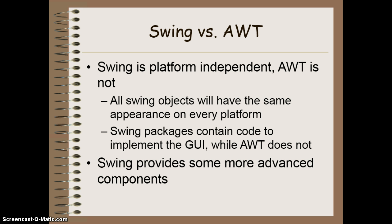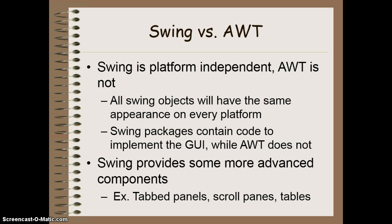In addition, Swing also provides some more advanced components that are not available in the AWT package. These include things like tabbed panels, scrolling panes, tables, and so on.